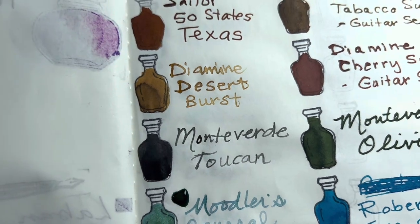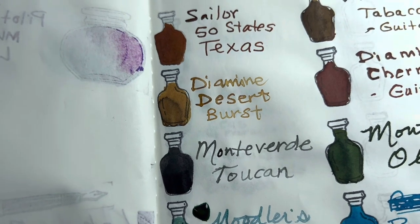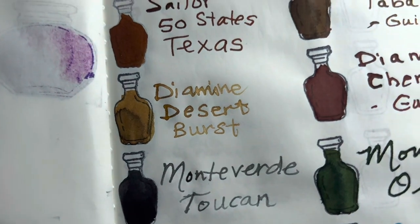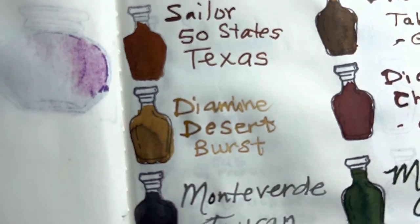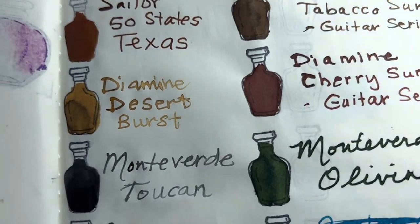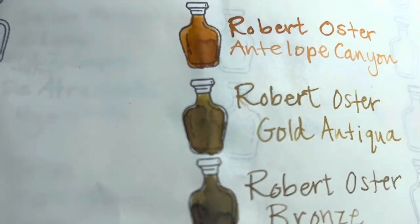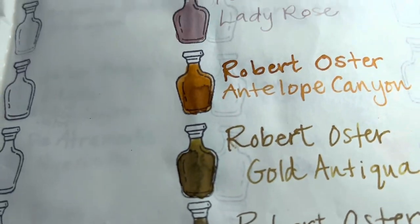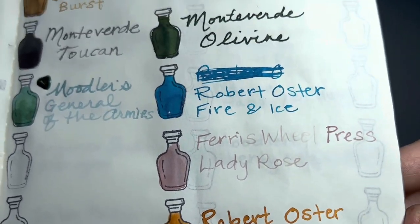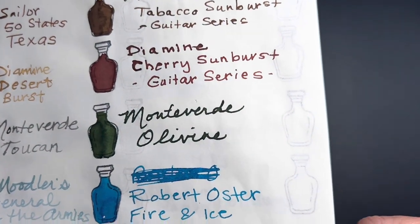So, the Monteverdi Toucan looks like it has some shimmer in it. It's looking like a dark gray, and the shimmer is either gold or bronze. Diamine Desert Burst is another beautiful shading ink similar to my coffee ink from a previous video. Again, these inks have dried the Robert Oster Bronze, Gold Antiqua, Antelope Canyon, Lady Rose, Fire and Ice, and Olivine.